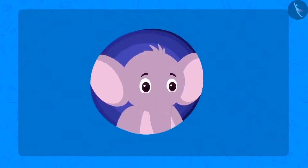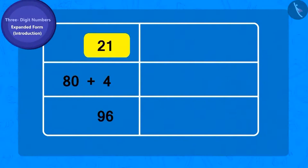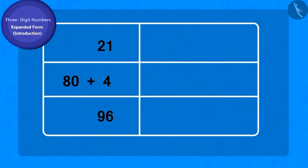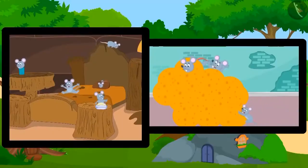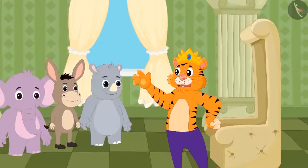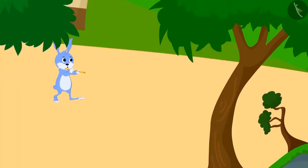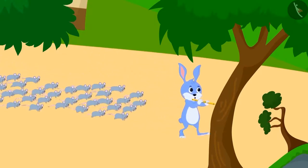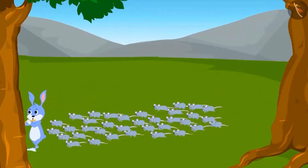Many other people tried to catch the rats after Golu Panda's great grandfather's effort. The number of rats caught by them is written in a table. Can you fill in the blanks using the method of expanding two-digit numbers? Despite everyone's efforts, there were still many rats in the kingdom. Finally one day, Bunny Rabbit the piper came to the village. He went around playing his flute and hearing the melodious sound, all the rats started following him and he successfully took them out of the village.